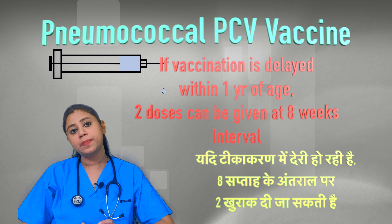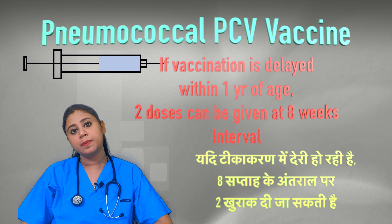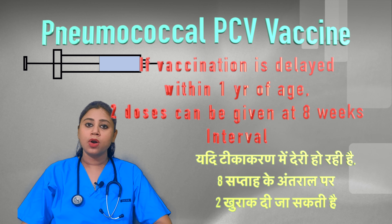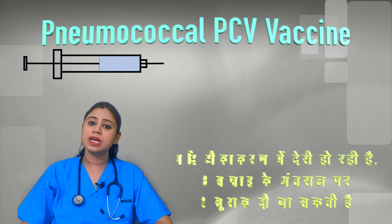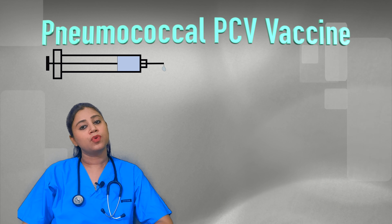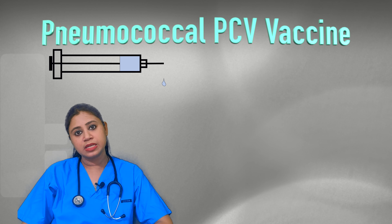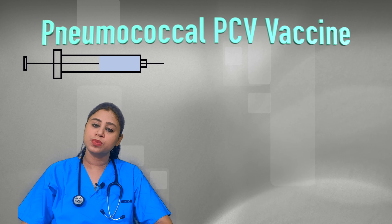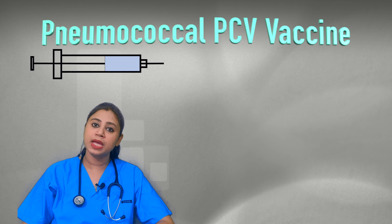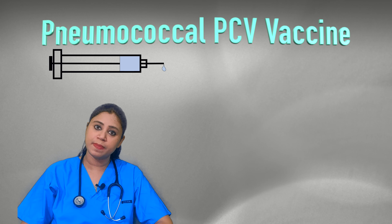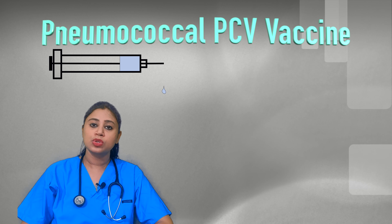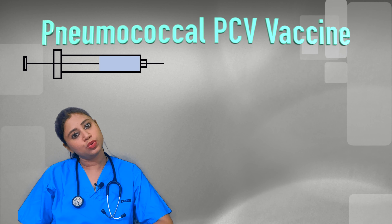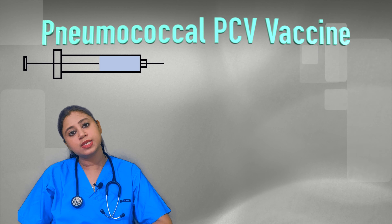If the first and second doses were missed, what should you do? If the child did not receive the vaccine in the first year, and has received only one dose, they can receive two doses in the second year as a catch-up schedule.